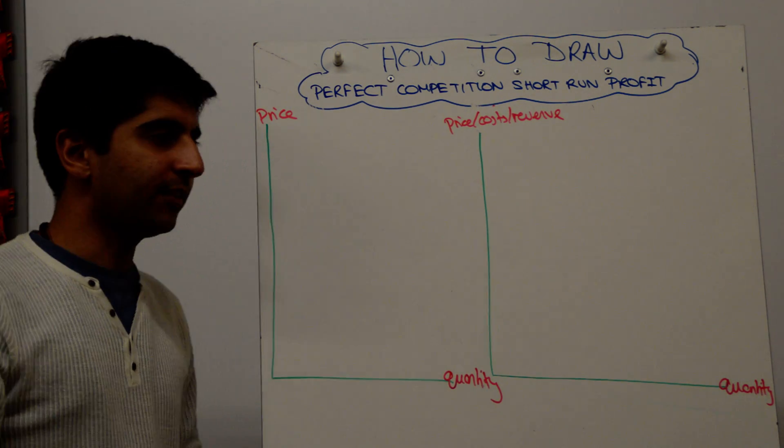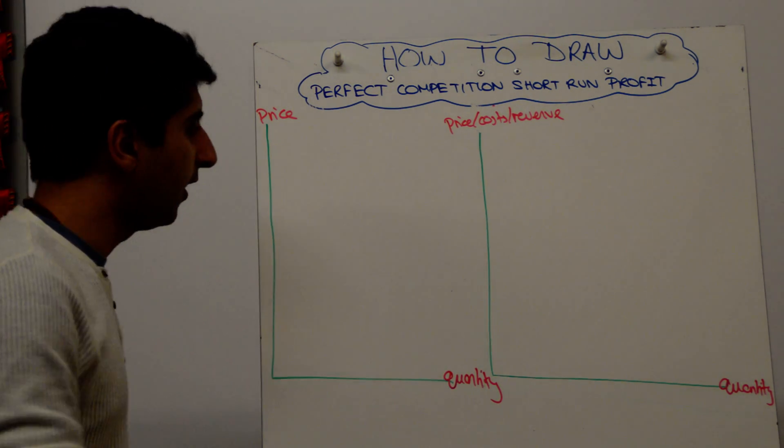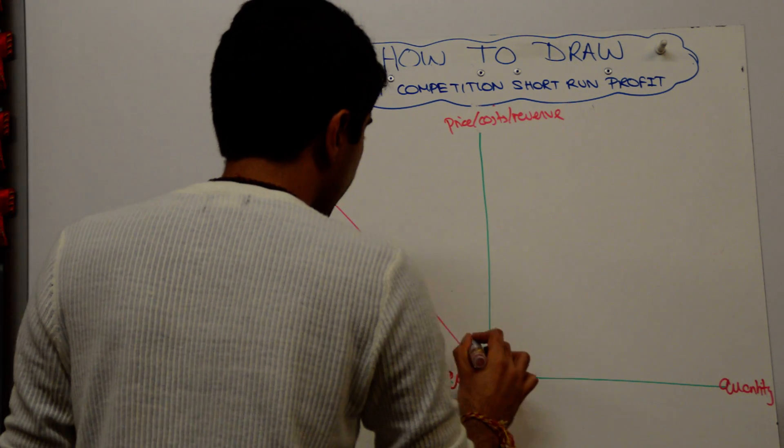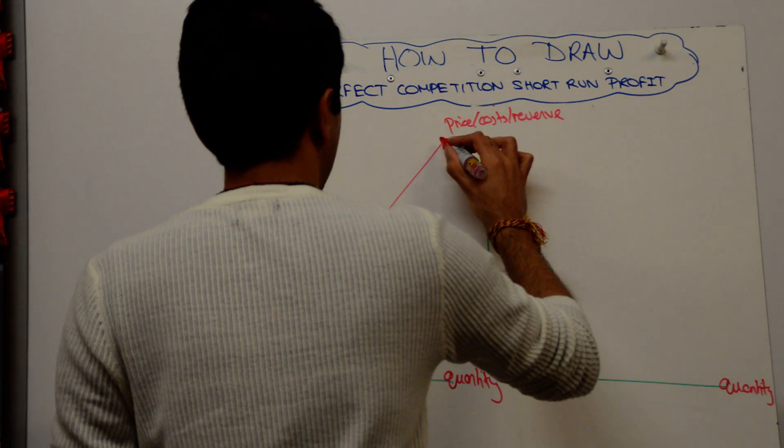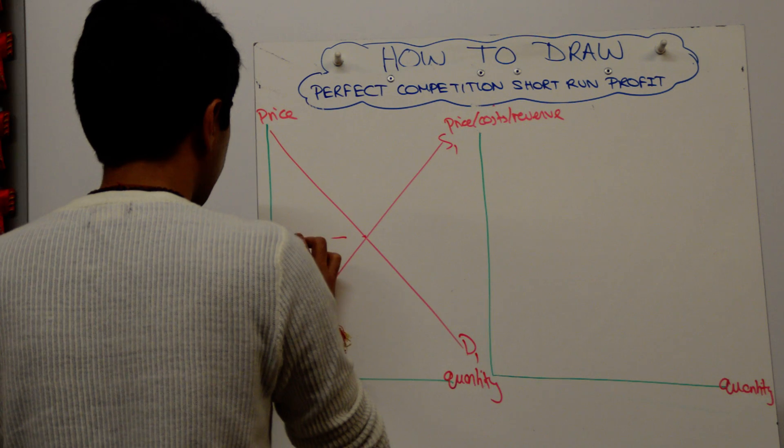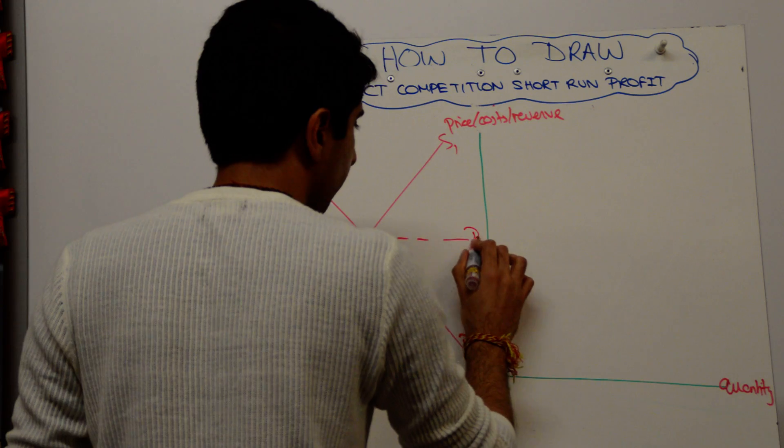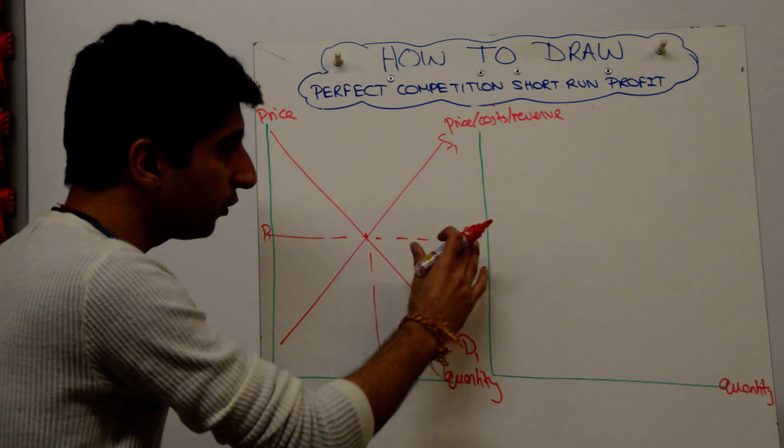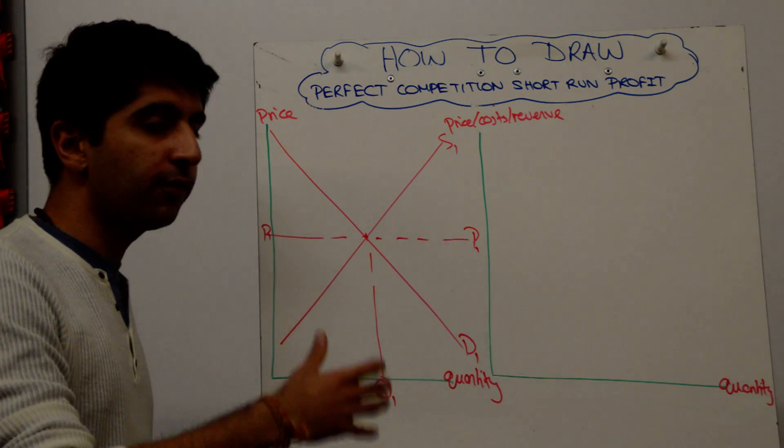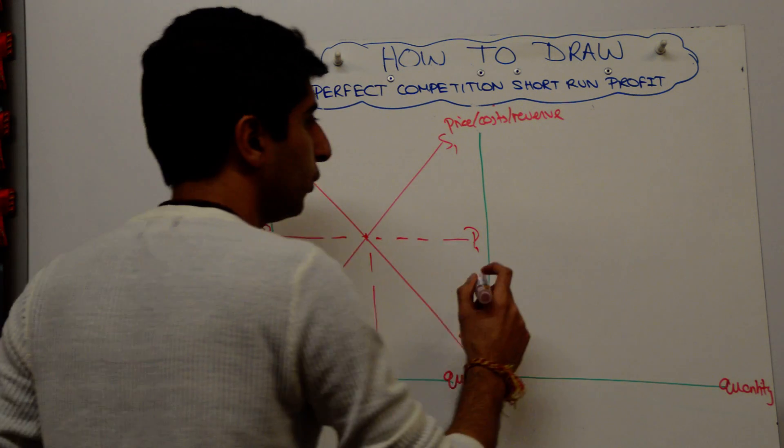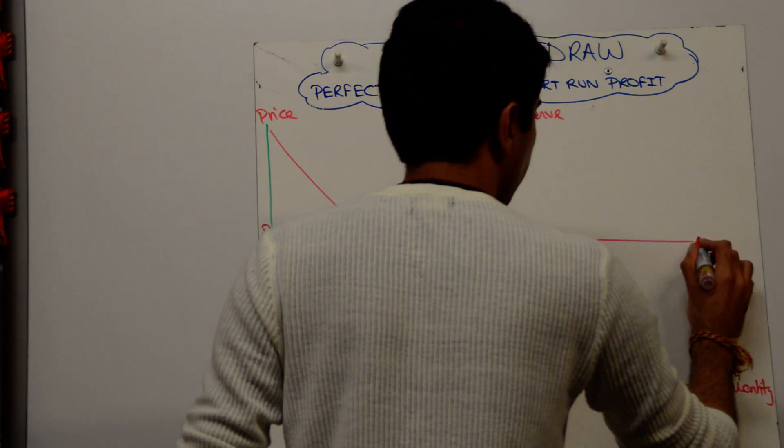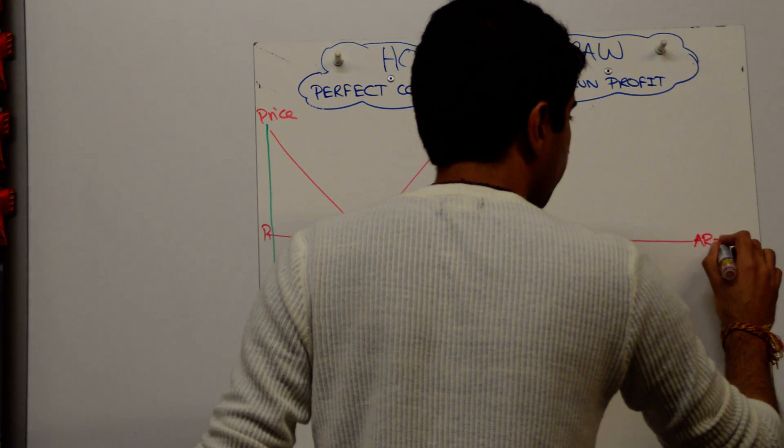The key thing here is not to rush too far ahead. So do the basics. Draw your market with a demand and a supply and equilibrium. Price and quantity of P1 and Q1. Firm is a price taker, so take that price across. We also know that the price is the average revenue curve, it's also the marginal revenue curve, it's also the demand curve. So take that across and label appropriately.